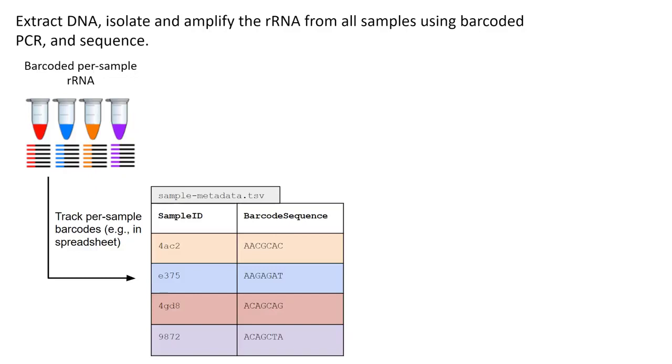You've amplified your target gene of interest, for example in this case the V4 region of the 16s rRNA. You've added unique barcodes to the reads from each sample. And of course ever so carefully recorded those per sample barcodes in your metadata file.